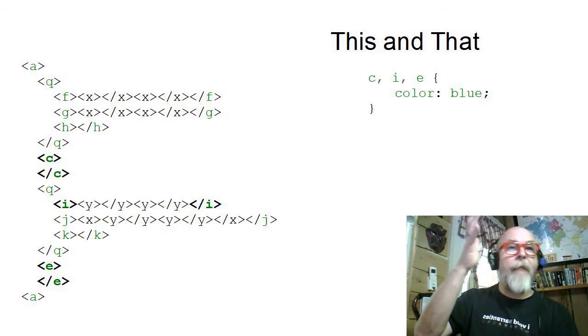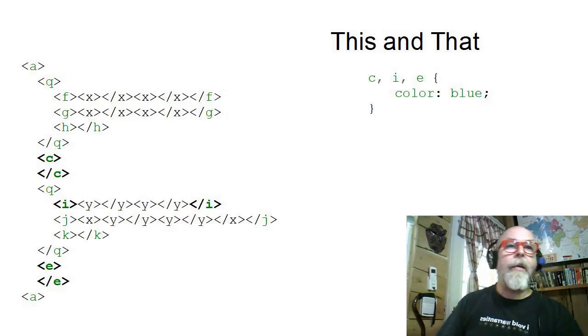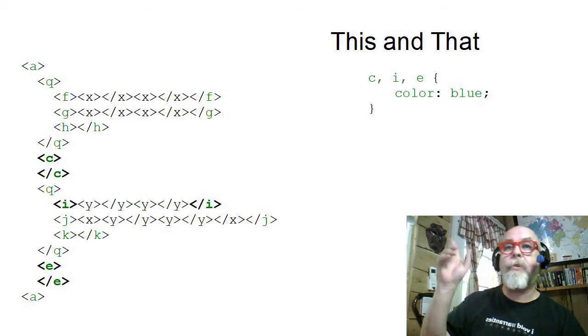The style C, comma, I, comma, E is going to get all of the tags that are of type C, all of the tags that are of type I, and apply the style to all of the tags that are of type E.